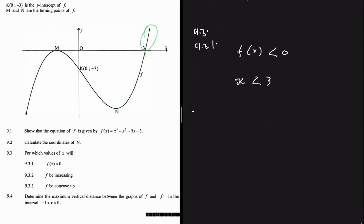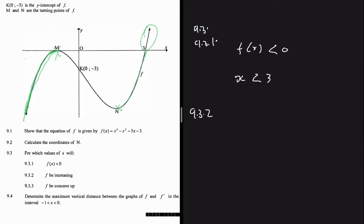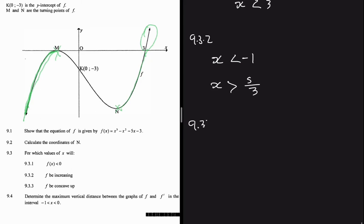Question 9.3.2: when is f increasing? f is increasing when the gradient is positive. From the graph, the gradient is positive when x is less than -1 (i.e., to the left of turning point m), and also when x is greater than 5/3 (to the right of turning point n, whose x-coordinate we calculated as 5/3).